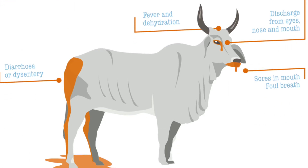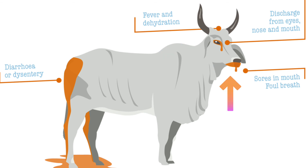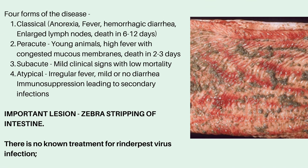In this picture you can diagrammatically see the clinical signs and symptoms of Rinderpest: diarrhea or dysentery, fever and dehydration, discharge from eyes, nose, and mouth, and sores or foul breath from the mouth. There are four forms of Rinderpest — classical, per-acute, sub-acute, and atypical. In the classical form, there is anorexia, fever, hemorrhagic diarrhea, enlarged lymph nodes, and death in 6-12 days. In the per-acute form, young animals are usually affected with high fever, congested mucous membranes, and death in 2-3 days. In the sub-acute form, there are mild clinical signs with low mortality. In the atypical form, there is irregular fever, mild or no diarrhea, and immunosuppression often leading to secondary infections.